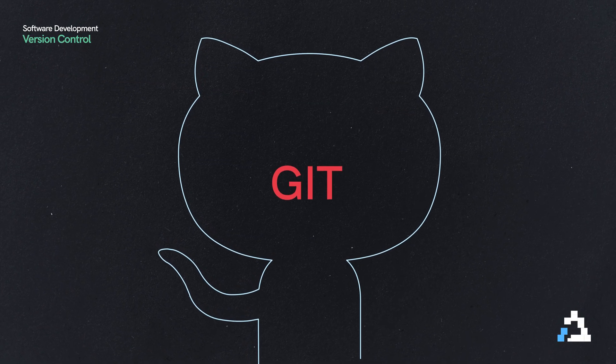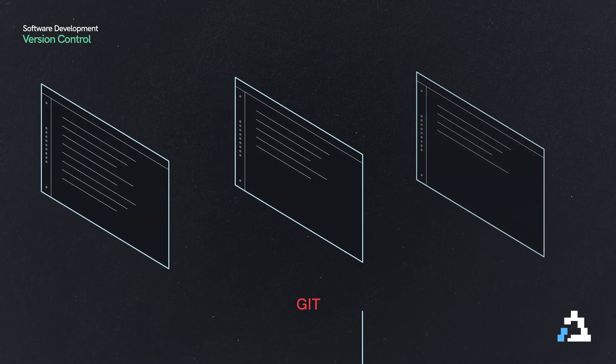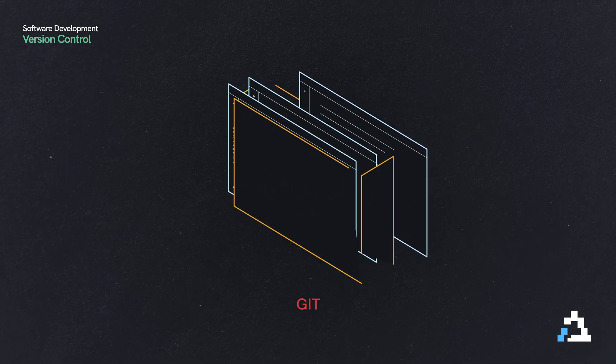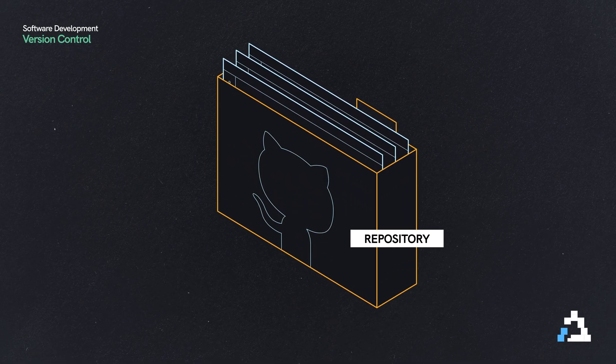Probably the first thing that we need to talk about in the world of software development is the idea of version control. It's also called source control or source code control — it doesn't matter what it's called, it's all the same. It allows us to track changes to our source code. There are many different kinds of version control, but the de facto standard is called Git. Our project, or at least the files within our project, live inside of a big folder called a repository.